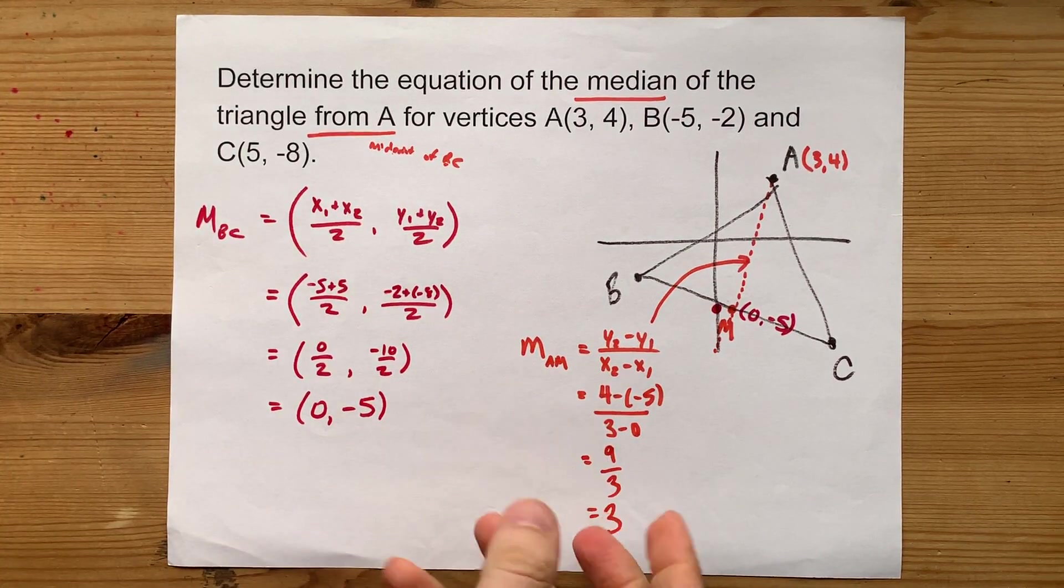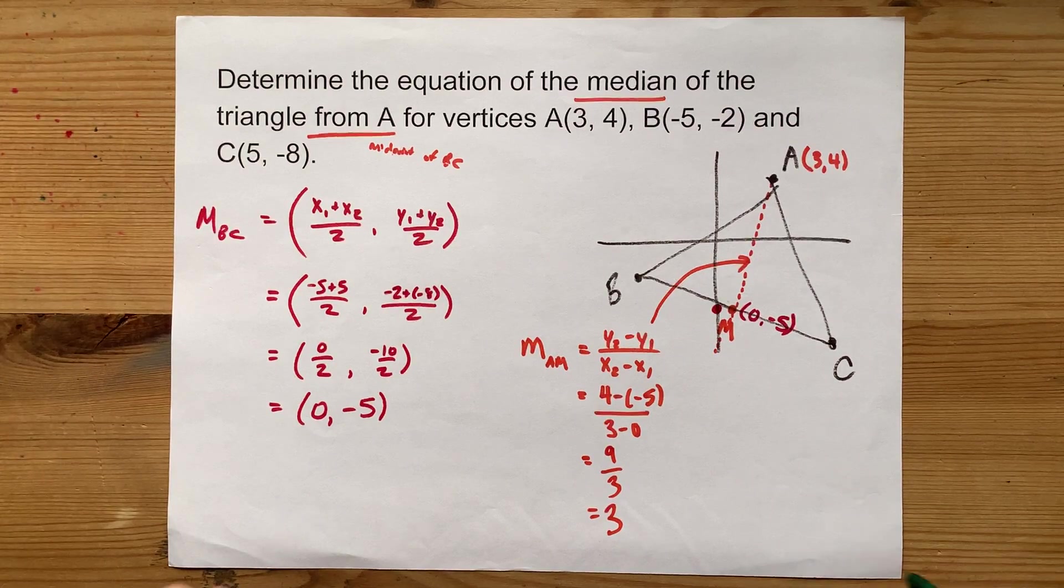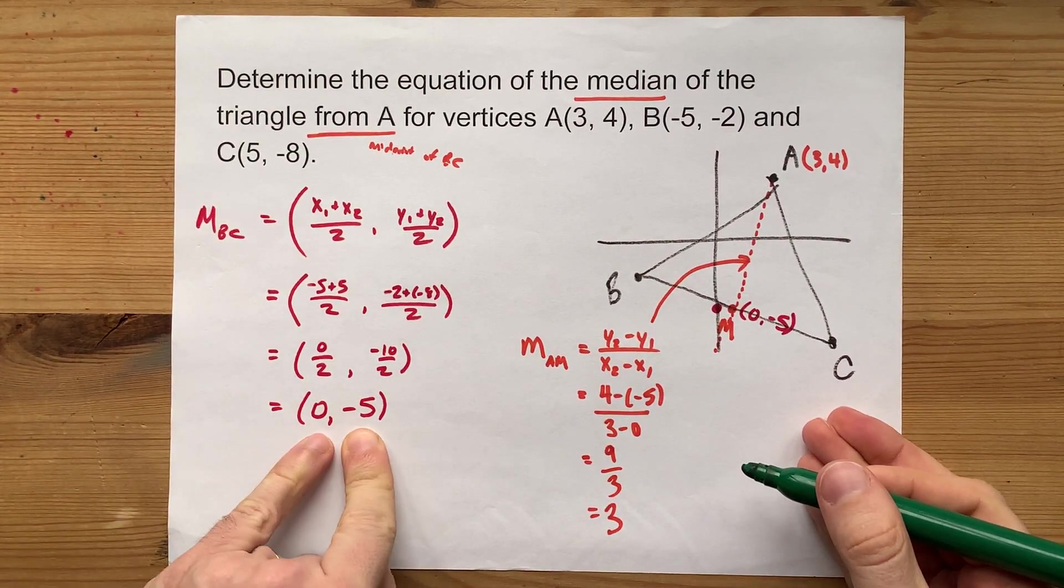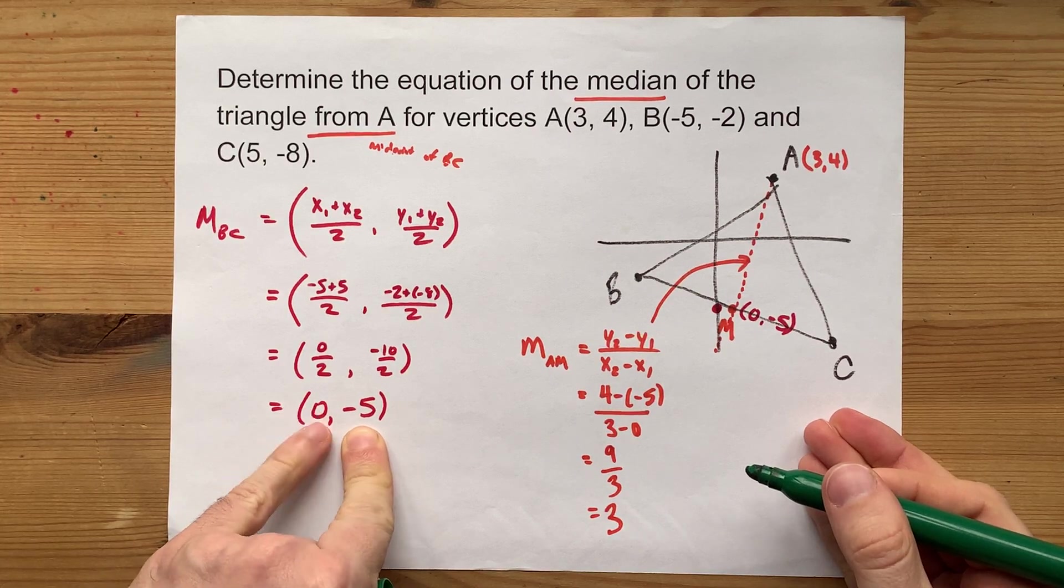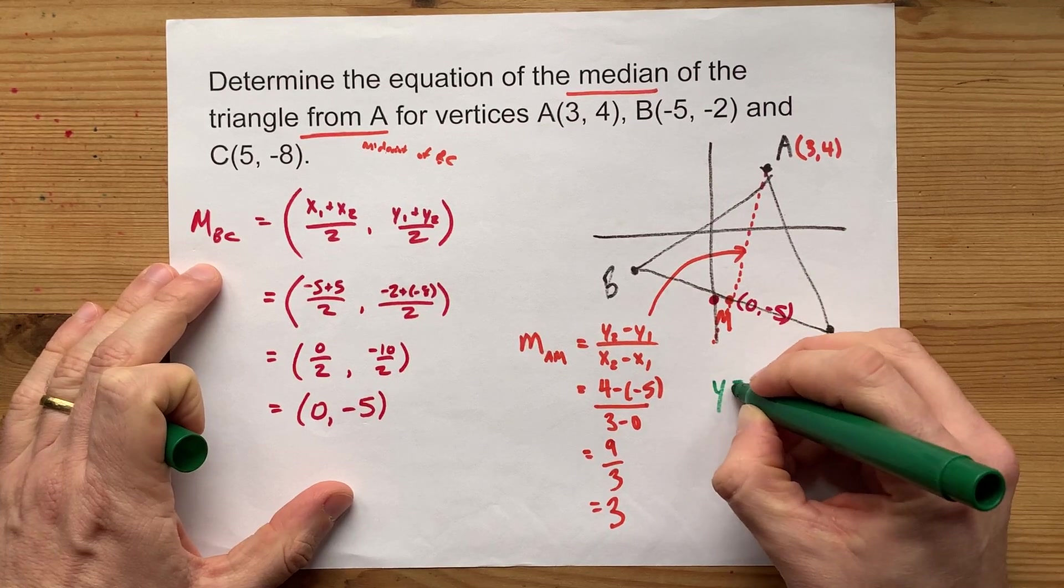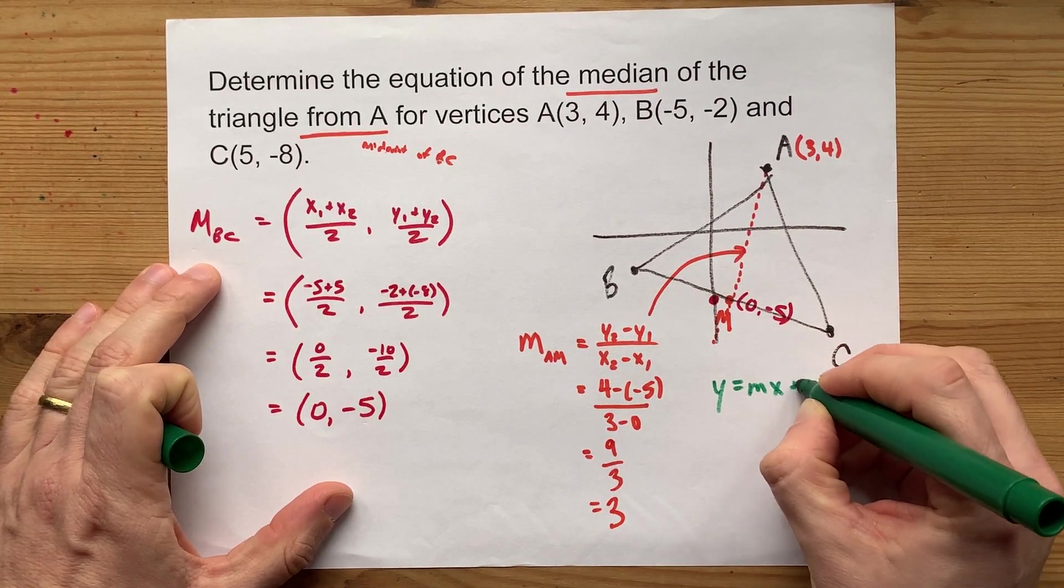Now, how do you create the equation knowing the slope? Well, I actually already know my b. It's right here at negative 5. Y-intercepts are where x is 0. But I'm going to show you the longer way of doing this. The way I do it is using y equals mx plus b.